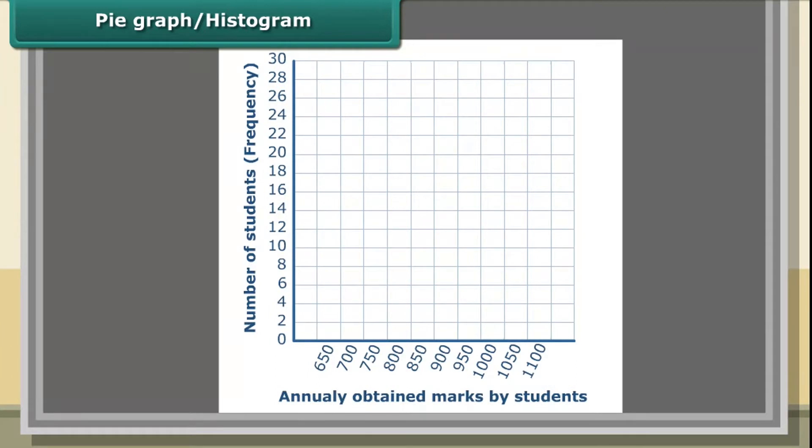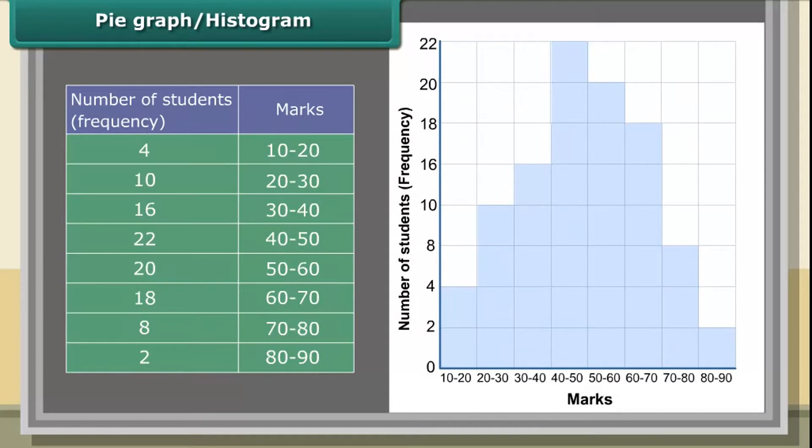Histogram. A histogram is a graphical representation of a frequency distribution in the form of rectangles with class intervals as bases and heights proportional to corresponding frequencies, such that there is no gap between any two successive rectangles. The following table gives the marks scored by 100 students in an entrance examination.